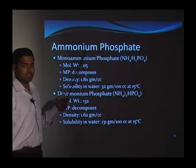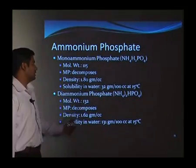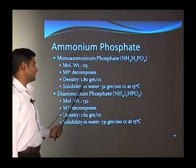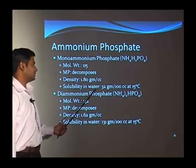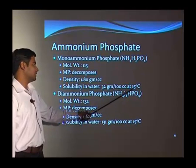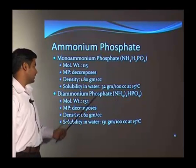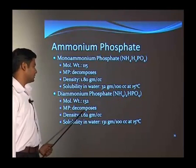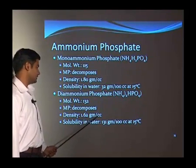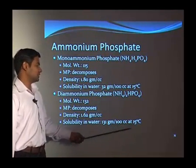The next thing we will discuss is ammonium phosphate. The mono ammonium phosphate has the formula NH4H2PO4, molecular weight 115, decomposes on heating, density 1.80 gram per cc, and is water soluble. The di-ammonium phosphate has molecular weight 132, also decomposes after heating, density 1.62 gram per cc, and solubility of 131 gram per 100 cc at 15 degrees Celsius in water.